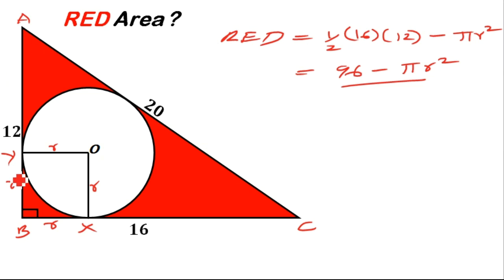Now if the length from A to B is 12 and from Y to B is R, then from A to Y is going to be 12 minus R.